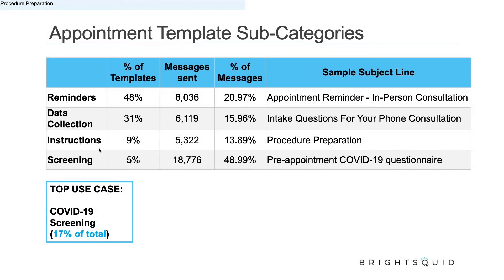Sample subject lines include: appointment reminder in-person consultation, appointment reminder phone consultation — sometimes including intake questions for the phone consultation. What clinics report is that by collecting patient information in advance of an appointment, they are able to see more patients in a day. About 86% of clinics agree that pre-collecting patient information reduces the length of appointments by cutting out part of the interview process. About 84% say it also improves clinician effectiveness.